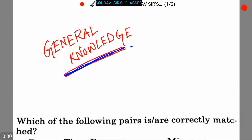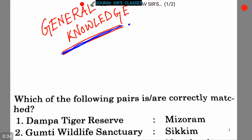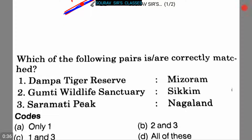Today we are discussing some questions on general knowledge. Here is our first question: which of the following pairs is or are correctly matched? Three pairs are given — option one: Dampa Tiger Reserve, which is in Mizoram; Gunti Wildlife Sanctuary, which is in Sikkim; and Saramati Peak, which is in Nagaland.